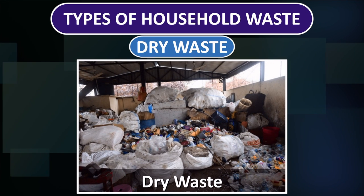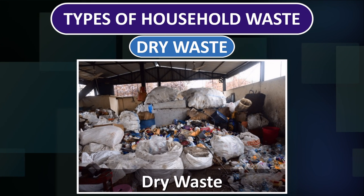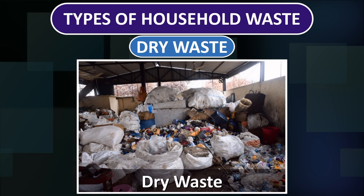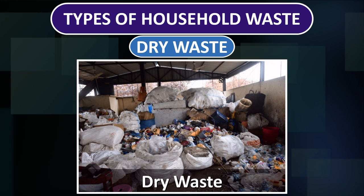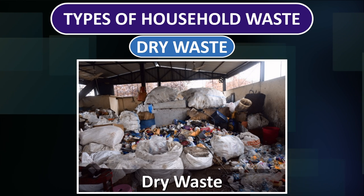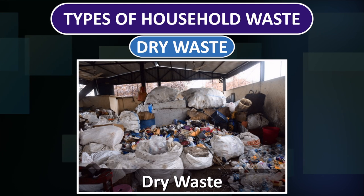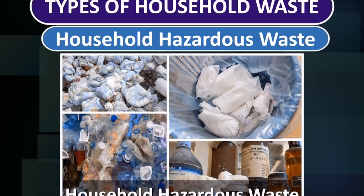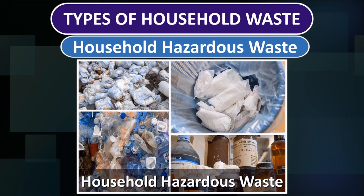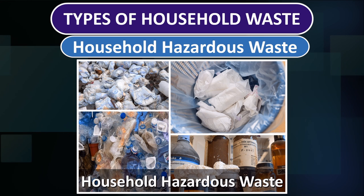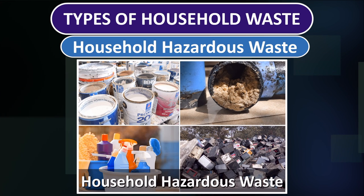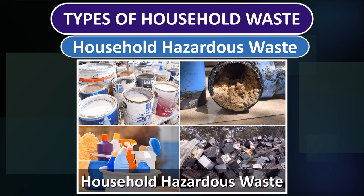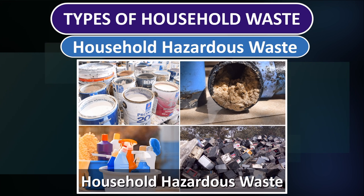Dry waste includes empty plastic bottles, bags, cardboard boxes, paper, old newspapers, glass, metal, and broken wooden items, etc. Household hazardous waste includes chemicals used in diapers, napkins, pesticides, toxic chemicals, paints, greases and cleaners, old batteries, etc.